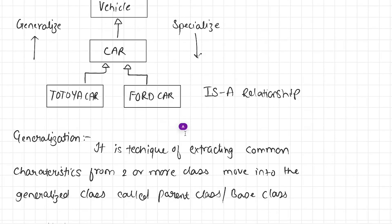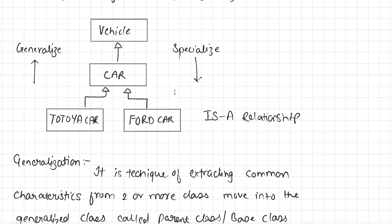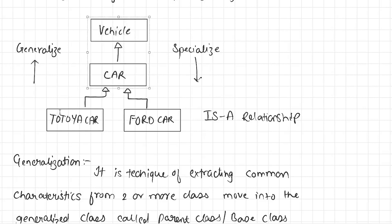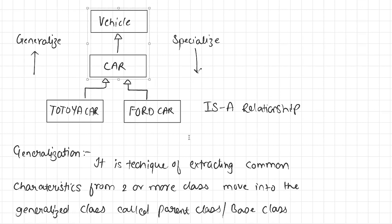What is Generalization? Generalization is a technique of extracting common characteristics from two or more classes and moving them into a generalized class called the parent class or base class. For example, Vehicle has a name, Car also has a name, and Toyota Car and Ford Car also have a name. Similarly, all Vehicles have a model, Car has a model, and Toyota and Ford Car also have a model. In generalization, we extract all the common characteristics from all child classes and move them into the generalized class, so that we can later create more specialized versions of that class.